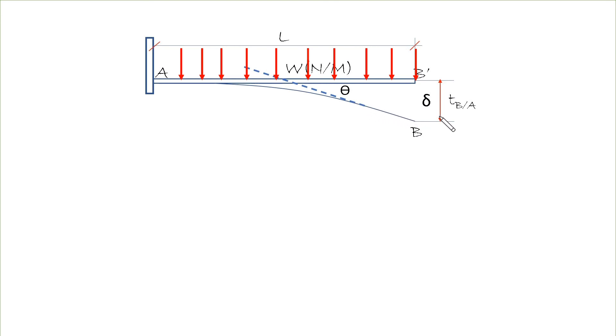The distance from the original position to its new position is called the deflection, and this is what we are looking for. Our theta AB is here.